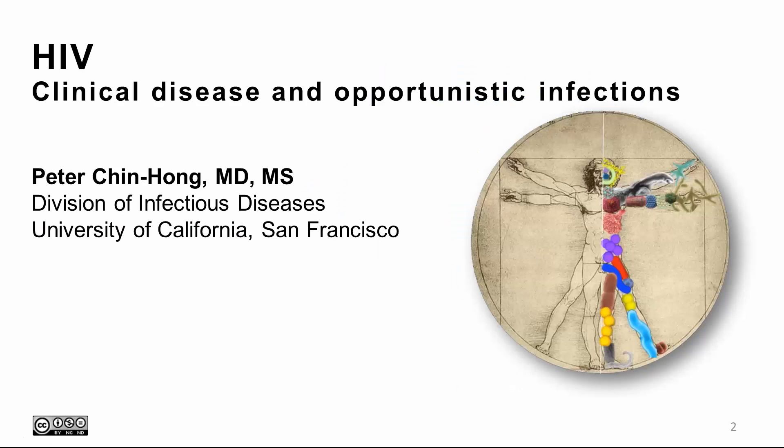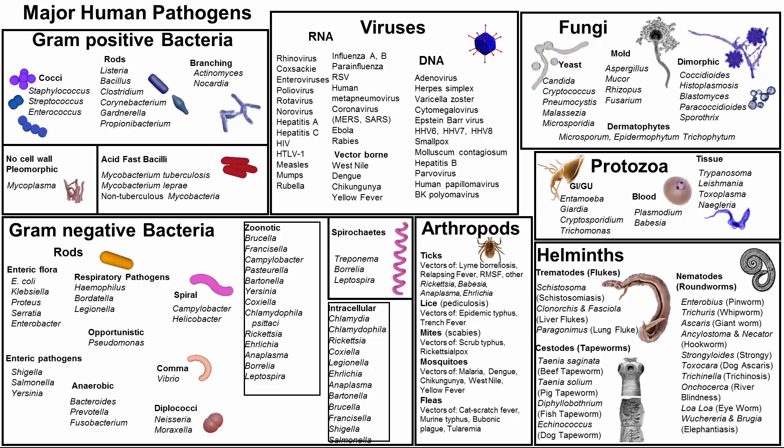Hi, my name is Peter Chinhang, and I'm an infectious disease physician faculty member at UCSF. Today I'm going to give an overview of HIV clinical disease and opportunistic infections. Here's our pathogen map with a whole host of organisms, including the subject of today, which is HIV. We will also be discussing a host of other pathogens which are opportunistic infections.